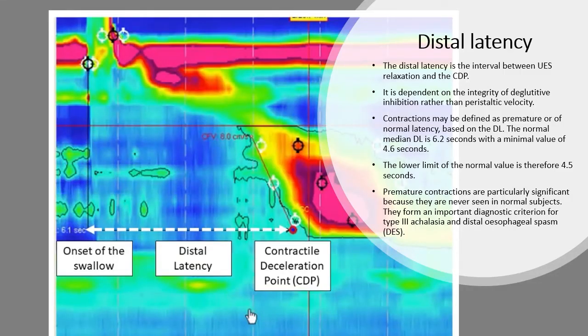The distal latency is the interval between the upper esophageal sphincter relaxation and the contractile deceleration point. It is dependent on the integrity of the deglutitive inhibition rather than the peristaltic velocity.